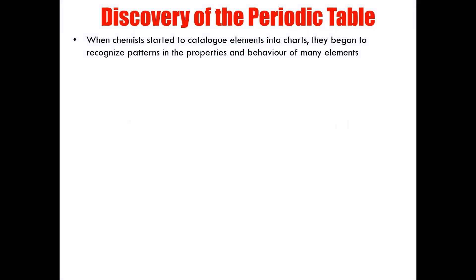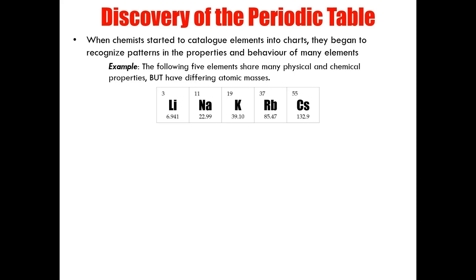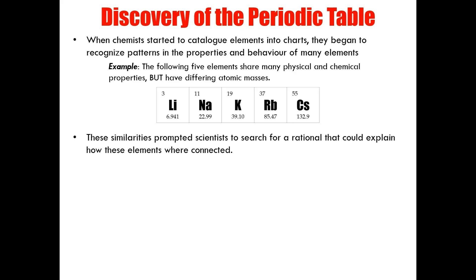In the mid-1800s, when chemists started to catalog elements into charts, they began to recognize patterns in the properties and behavior of many elements. Take these five elements, for example. Each of them shares many physical and chemical properties, but differ from one another by atomic mass. These similarities prompted scientists to search for a rationale that could explain how these elements were connected.